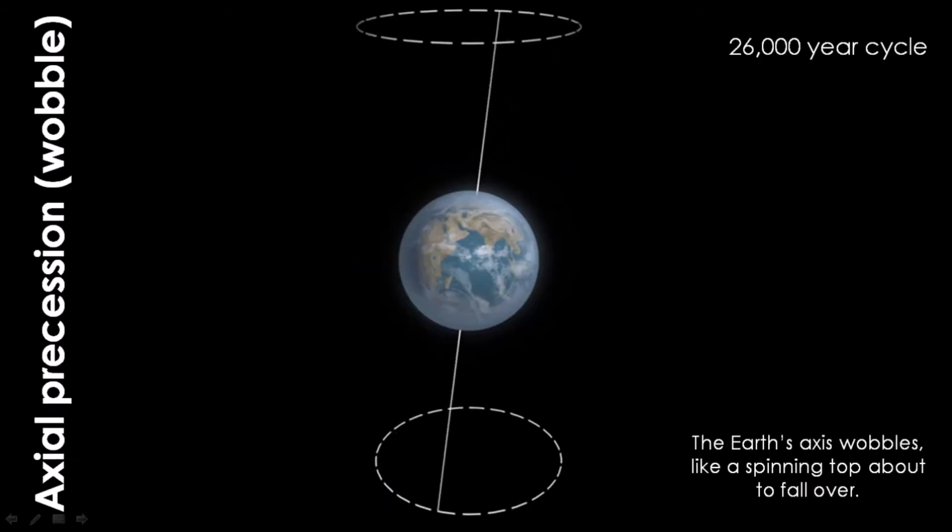This wobble is due to tidal forces caused by the gravitational influences of the Sun and the Moon, and this causes the Earth to bulge at the equator, affecting its rotation.